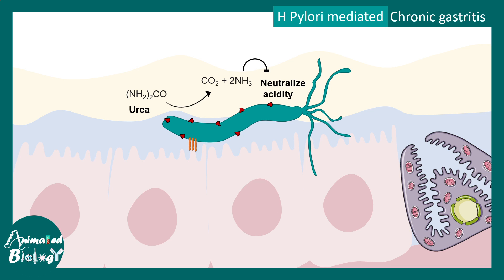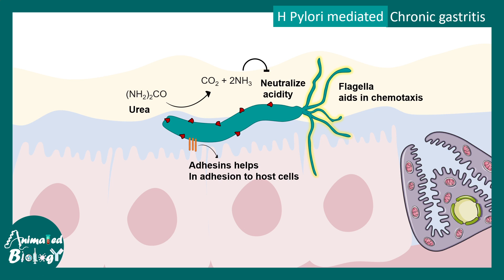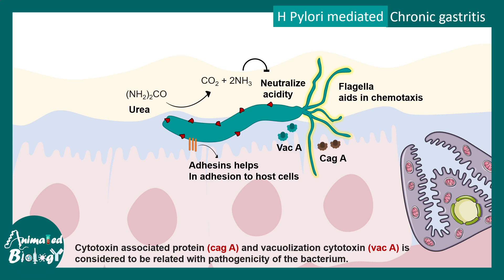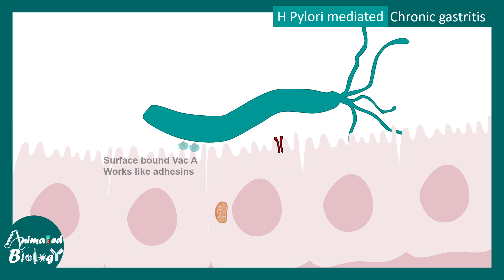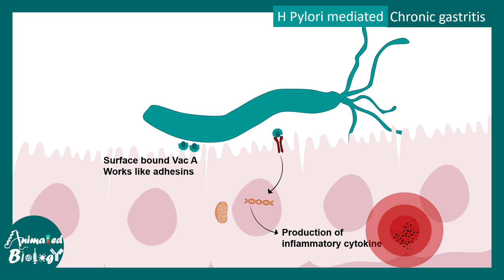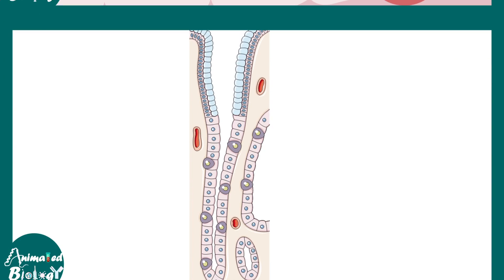H. pylori also has specific adhesion molecules that help it adhere to the cells of the stomach lining, and flagella that help it move and navigate through the thick mucus layer. Specific proteins such as VAC-A and CAG-A are potent cytotoxins associated with pathogenicity. VAC-A works as an adhesin that triggers specific cytokine production, evoking inflammation, and can also lead to cytochrome C release that ultimately causes apoptosis.